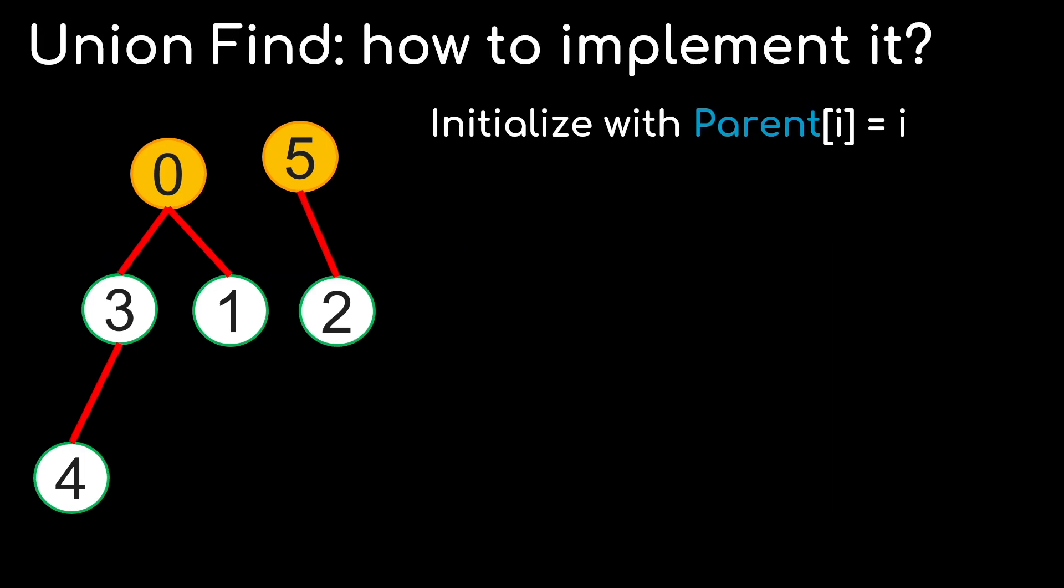Now we have the basic idea, let's discuss how we can implement this in code. We initialize this array called parent, where parent of i gives the parent of the object i. Initially, each element is their own individual group, so we initialize the array with parent of i equals i.